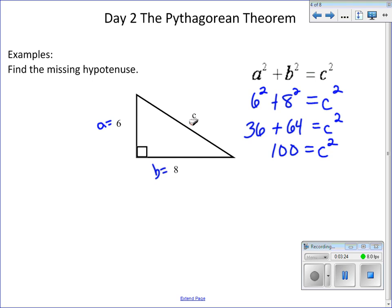However, we don't want it to be squared. We want to know what C is. So in order to get C by itself, we're going to take the square root of both sides. The square root of C squared will give us C, which is what we want.